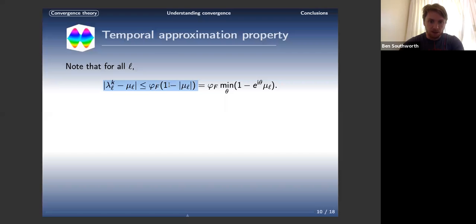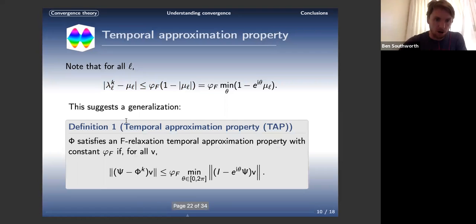I want to use this to introduce what I call the temporal approximation property. The basic idea is for convergence in the eigenvalue sense, we wanted this to hold. We pulled the 1 minus mu to the right-hand side, so we need lambda minus mu to be less than or equal to var_phi_f times 1 minus mu. What is this absolute value doing? If mu is a complex eigenvalue, this is just taking mu and rotating it to the positive real axis so it's as close to 1 as possible. Equivalently, we can put this as a min over theta of 1 minus the rotation e to the i theta times mu.